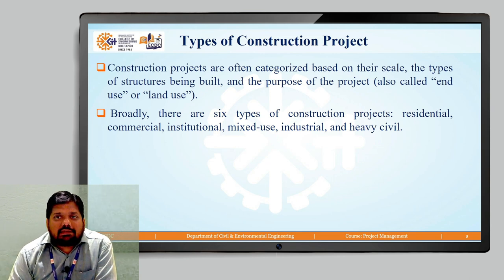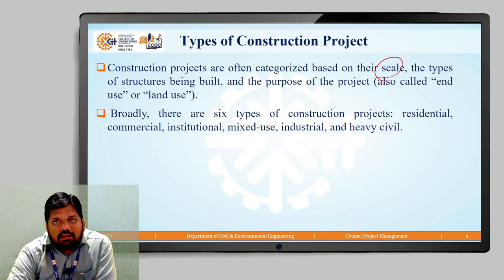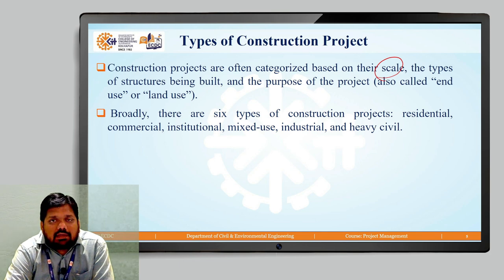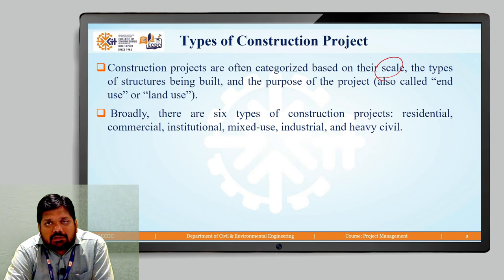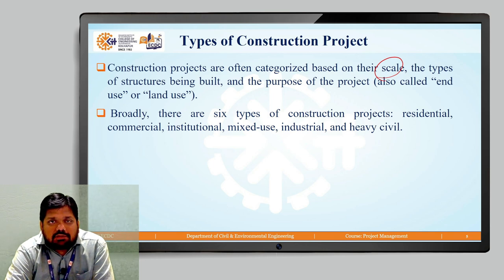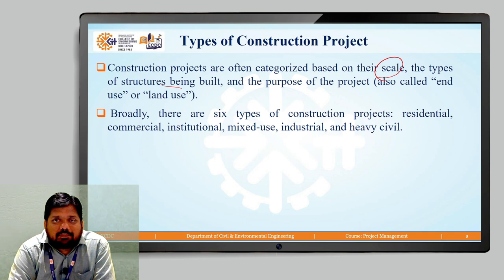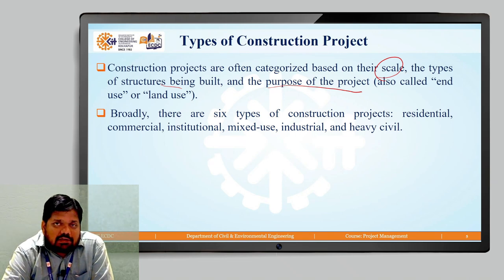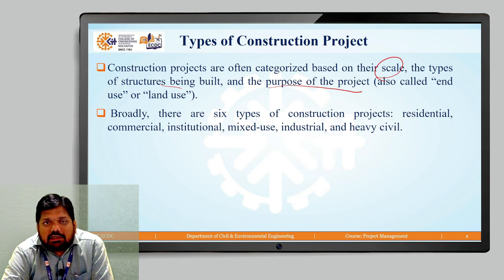Construction projects are often categorized based upon their scale. The scale of a project refers to how many people are getting affected, how much cost is involved, and how many people are getting benefited. We also consider the types of structures being built and the purpose of the project — for which purpose we are constructing a certain structure — which we can call the end use or the land use of the project.